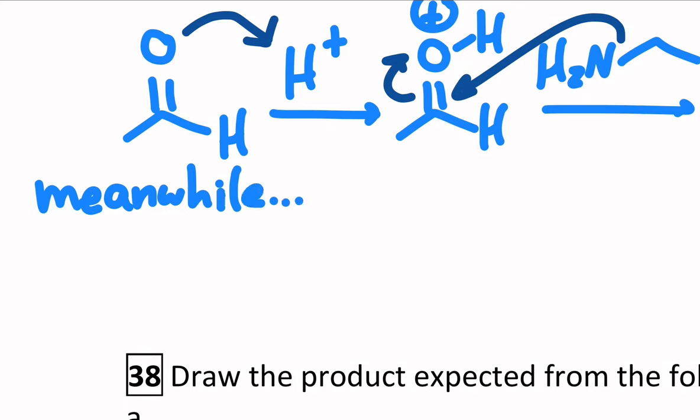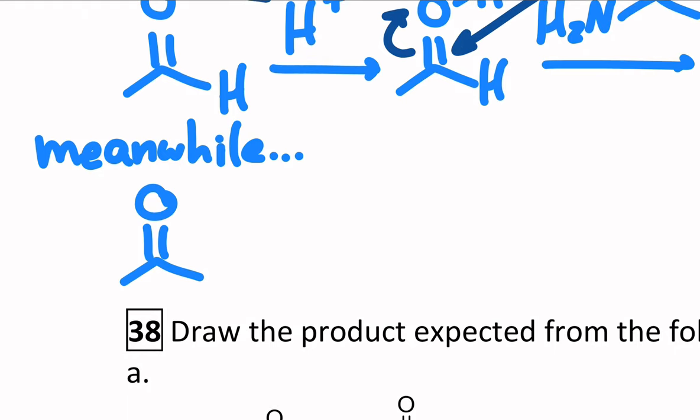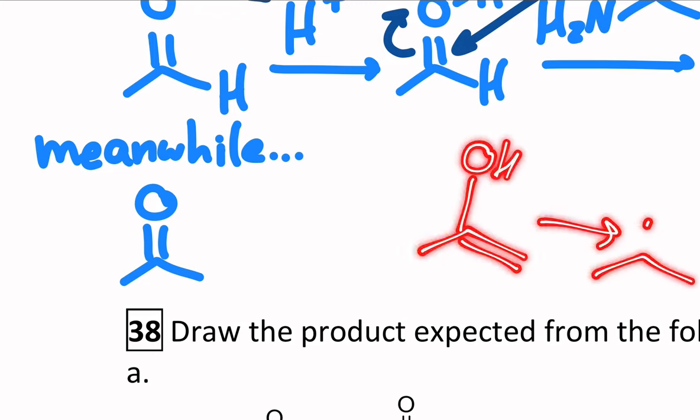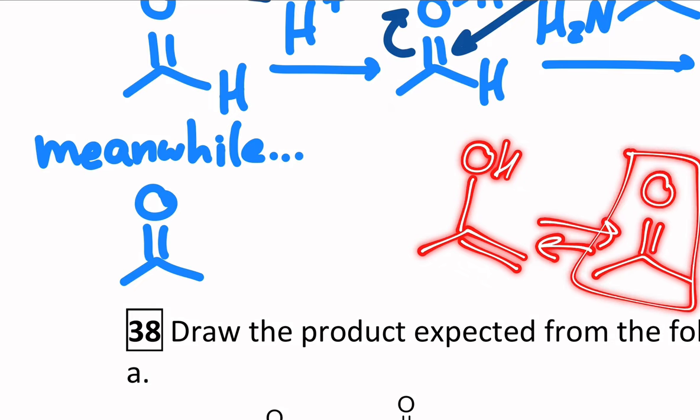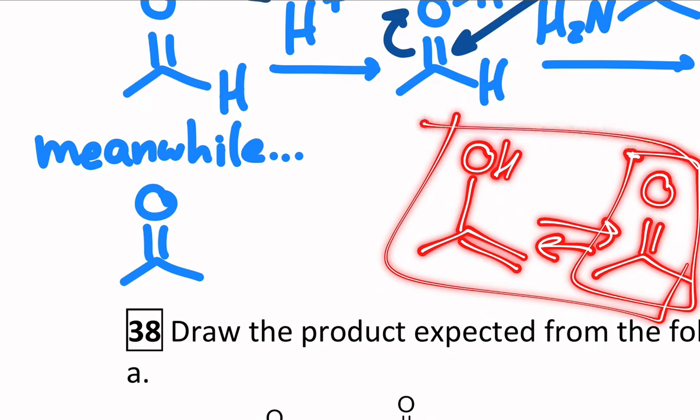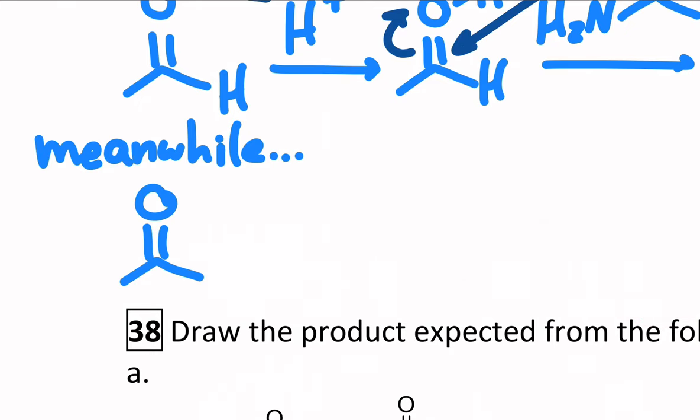Remember what tautomerization is. Tautomerization is when you have an enol turn into a ketone. That's reversible. And thermodynamically, the ketone is the more preferential version of those tautomers, which are just isomers. But the equilibrium mixture is always there. So there's always some amount of the enol that's present.